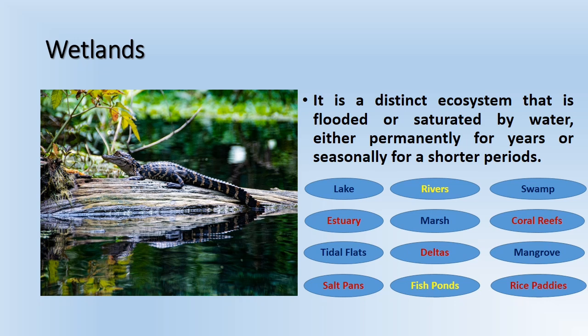Wetlands are an area of land that is either covered by water or saturated with water, either for a short period or permanently. Wetlands can be broadly divided into three groups: inland wetlands, coastal wetlands, and human-made wetlands. Inland wetlands include marshes, lakes, rivers, flood plains, and streams, while coastal wetlands include estuaries, mangroves, lagoons, and coral reefs. Human-made wetlands include salt pans, fish ponds, and rice paddies.